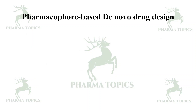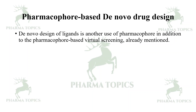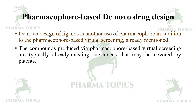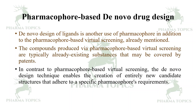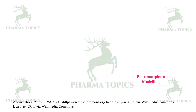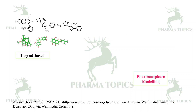Another use of pharmacophore is de novo drug design. The compounds produced via pharmacophore-based virtual screening are typically already existing substances that may be covered by patents. In contrast, the de novo design technique enables the creation of entirely new candidate structures that adhere to a specific pharmacophore's requirements. Pharmacophore modeling may be either ligand-based or structure-based; you identify common structural features and create a map by aligning all structures and studying common patterns.